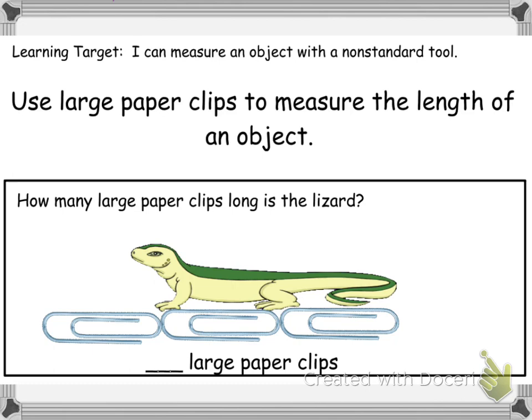Then make sure you have no overlaps — your paper clips should not be overlapping at all, none should be on top of the other. Then make sure you go endpoint to endpoint. Also, you must use the same unit of measure, which means if you're going to use large paper clips, you can only use large paper clips — you cannot mix large and small paper clips to measure one thing. Looking at this, I have all large paper clips.